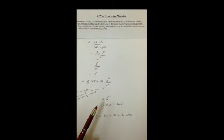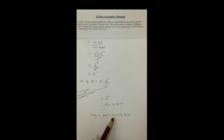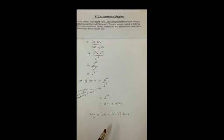D represents the field for the set. Our tag is equal to 26 minus 10, which is equal to 16 bytes.